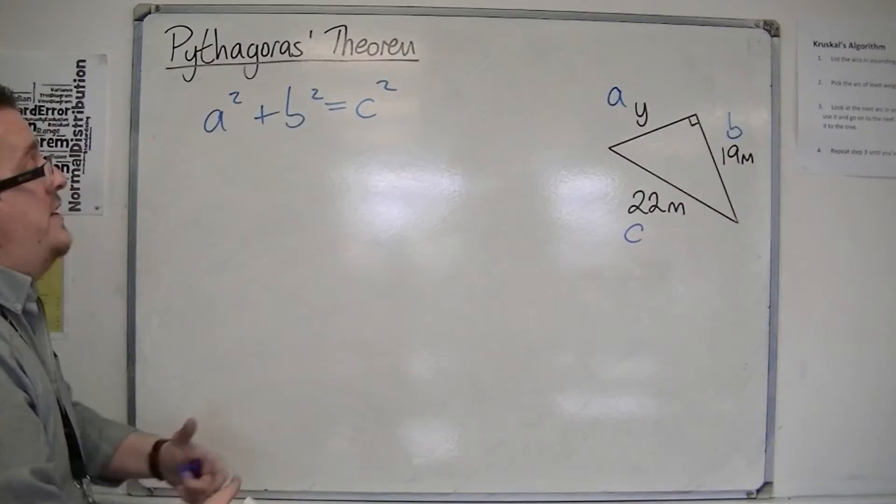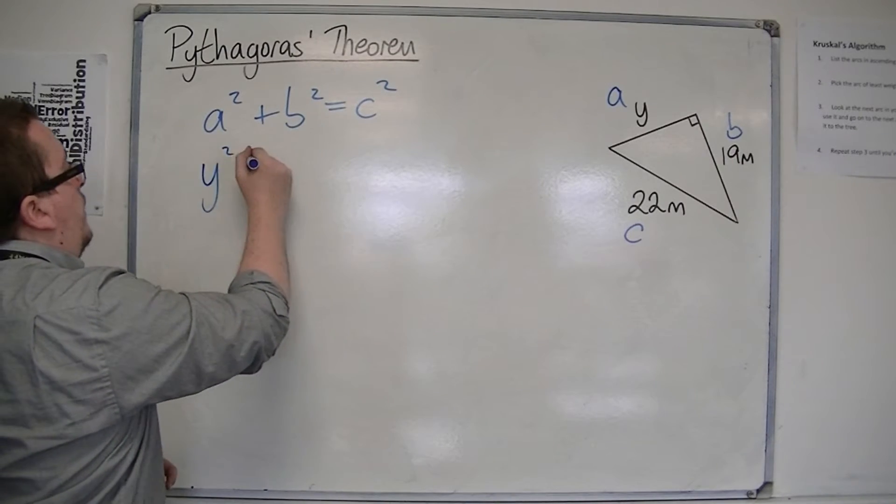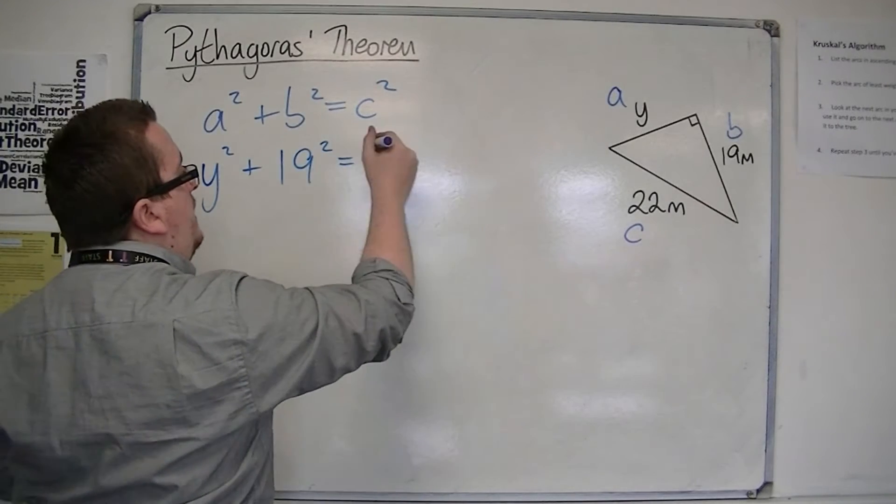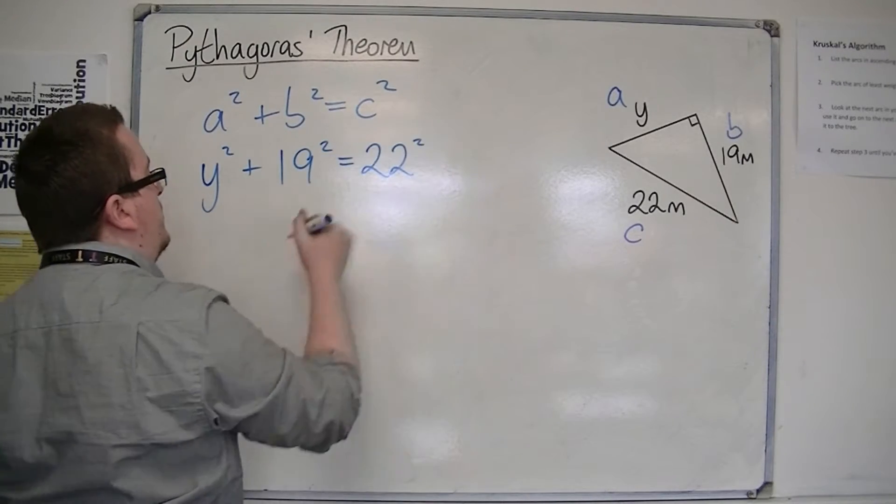So the a this time is y, so y squared, we've got b as 19, so we've got 19 squared, and c is 22, so 22 squared.